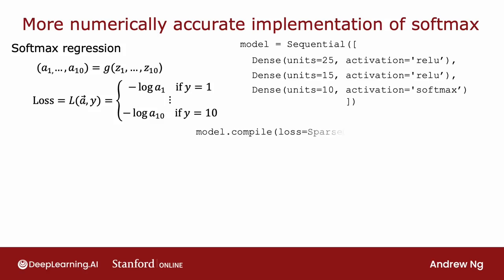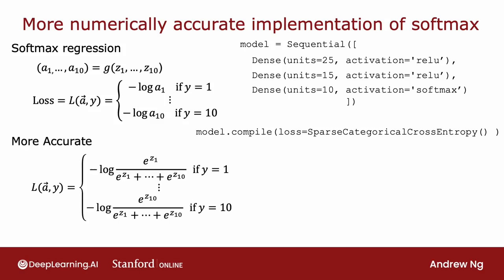This was the code that we had to do this computation in two separate steps. But once again, if you instead specify that the loss is, if y is equal to 1 is negative log of this formula, and so on, if y is equal to 10 is this formula, then this gives TensorFlow the ability to rearrange terms and compute this in a more numerically accurate way. Just to give you some intuition for why TensorFlow might want to do this, it turns out if one of the z's is really small, then e to a negative small number becomes very, very small. Or if one of the z's is a very large number, then e to the z can become a very, very large number. By rearranging terms, TensorFlow can avoid some of these very small or very large numbers and therefore come up with a more accurate computation for the loss function.